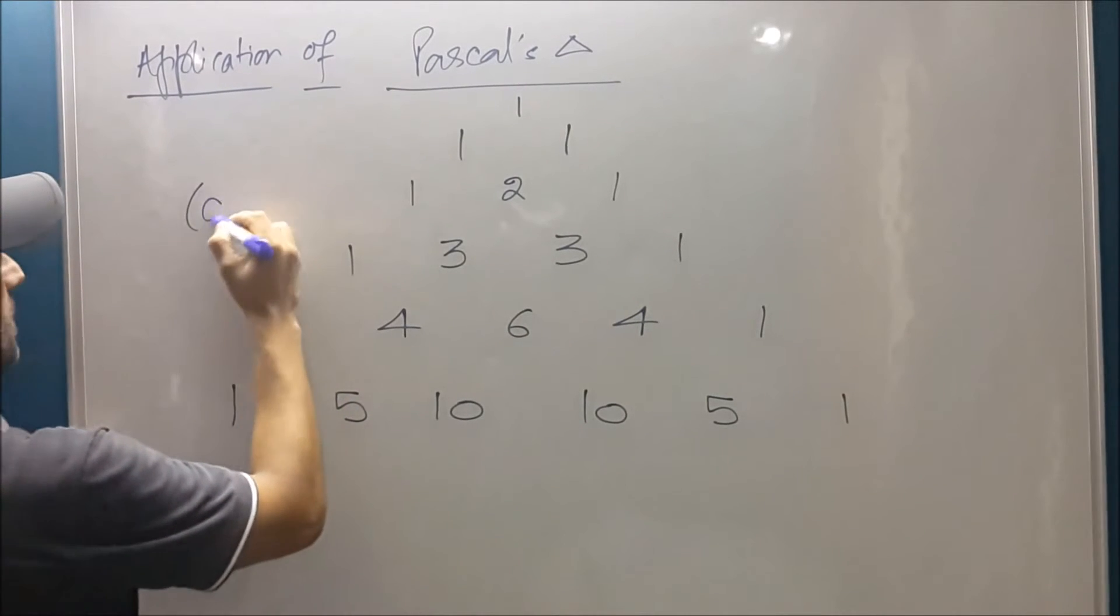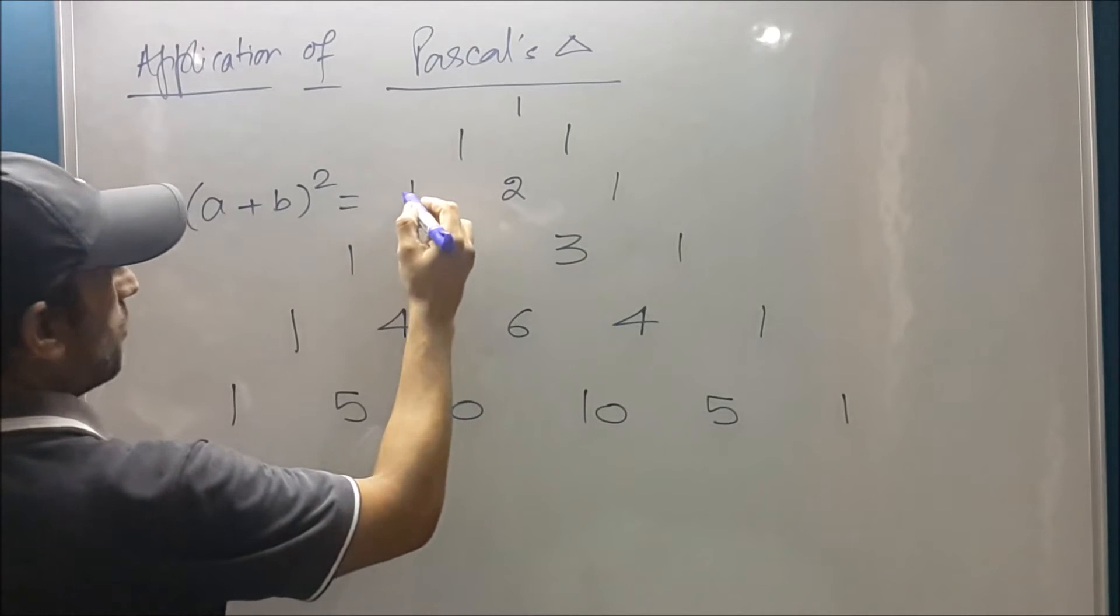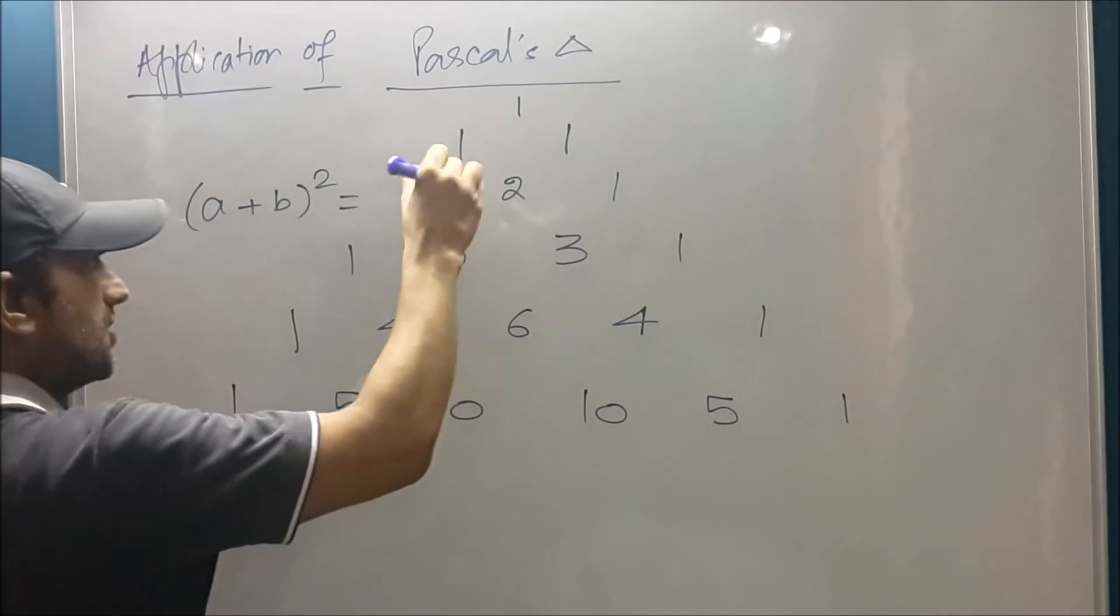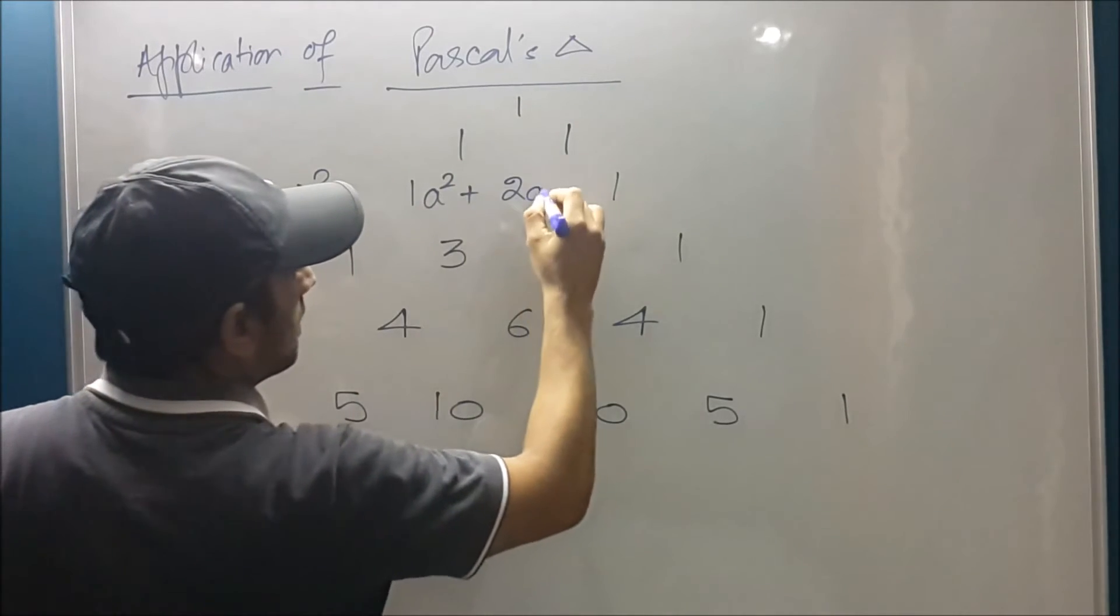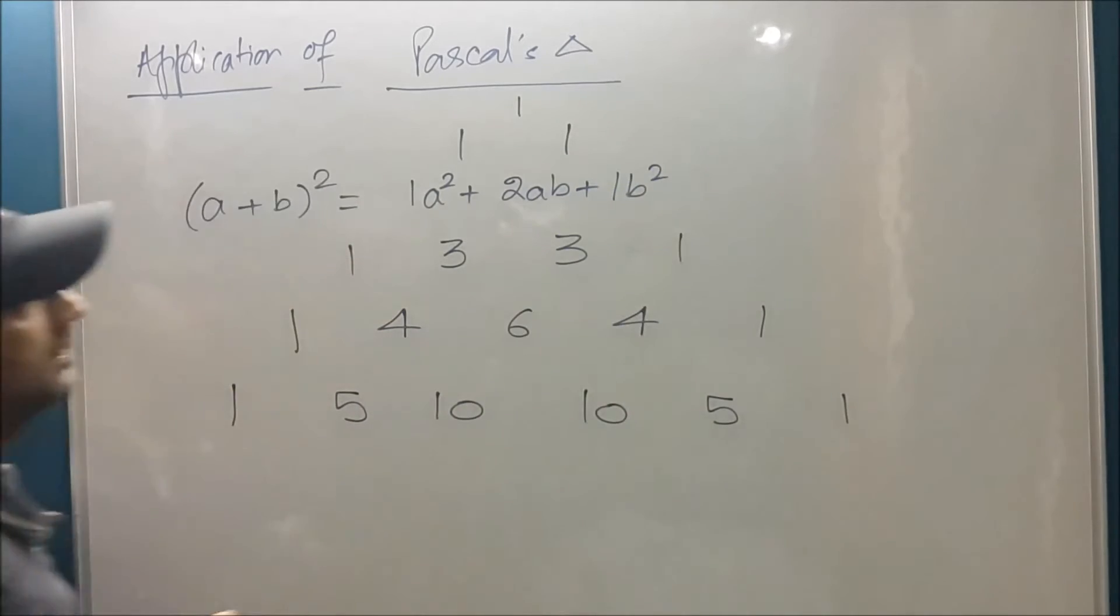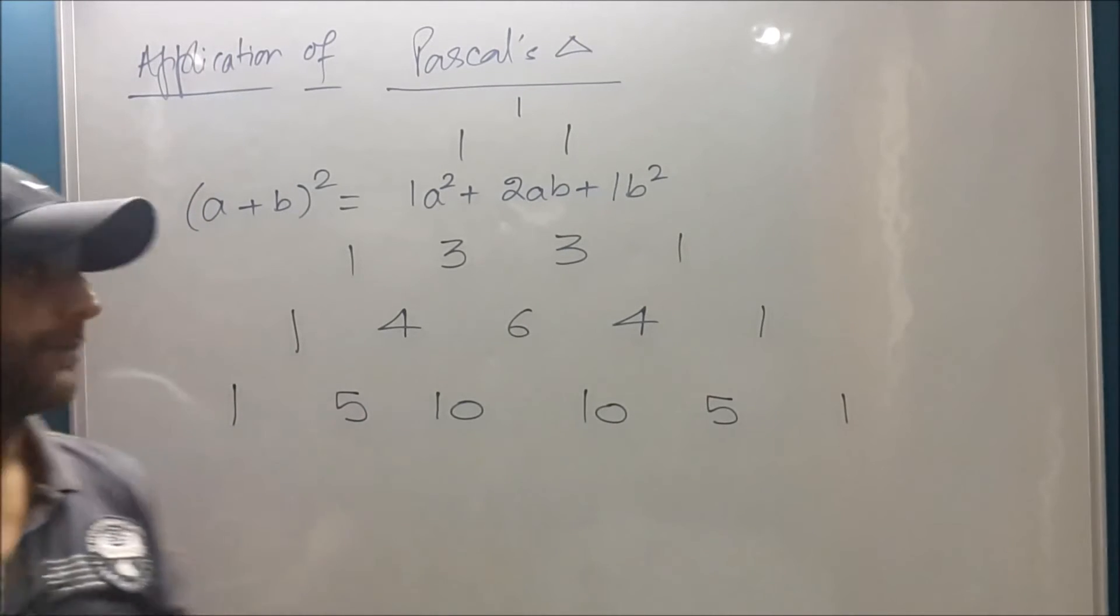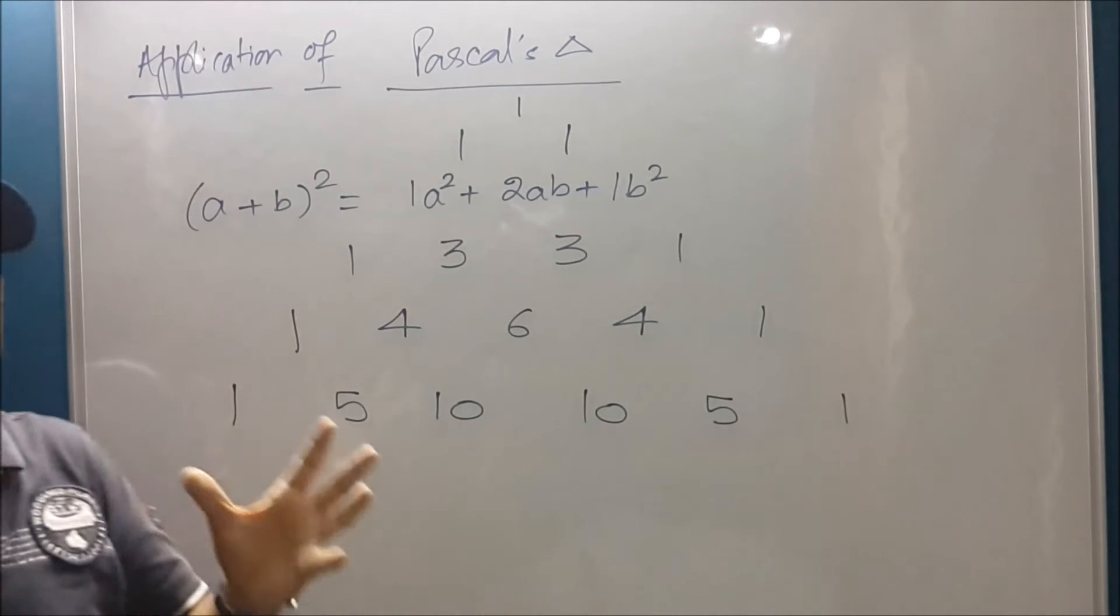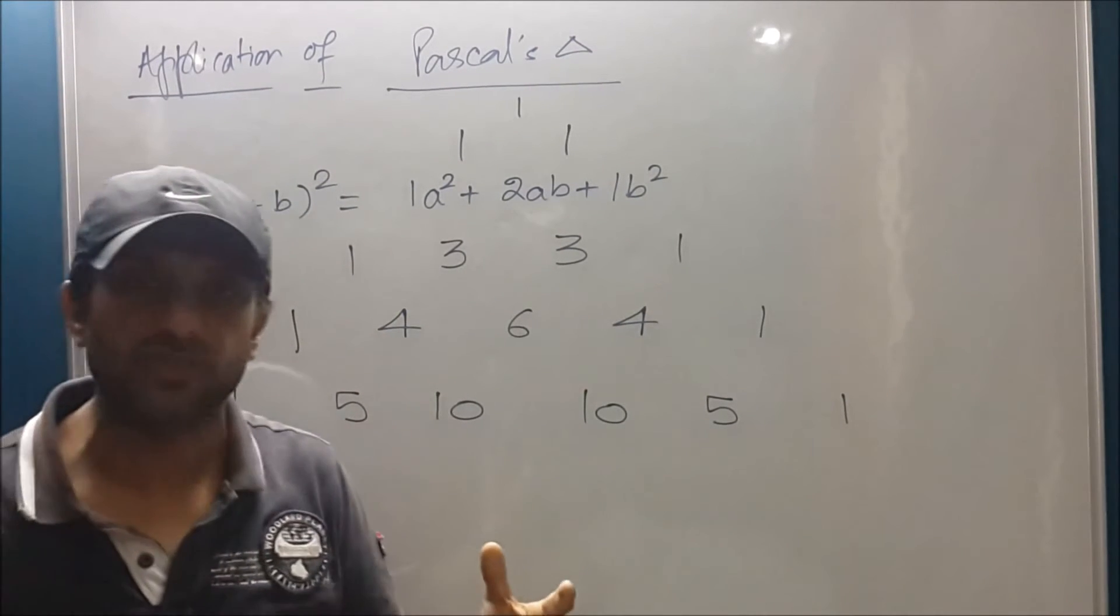If I had to open (a + b)², the answer will be one time a², then I'll reduce the power of a and that power will be given to b, 2ab plus b². You won't take interest because many students already know the formula for (a + b)². But gradually when I take you to the other rows, you'll be surprised and eager to understand the concept of Pascal's Triangle.